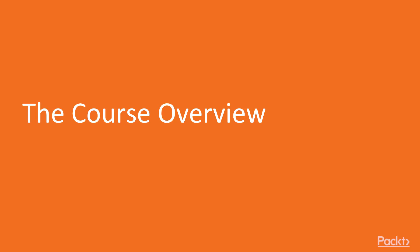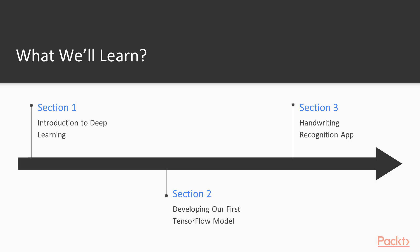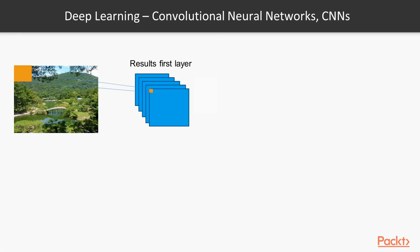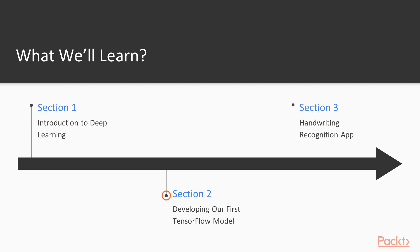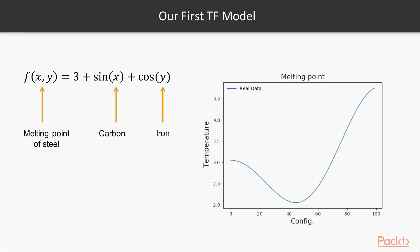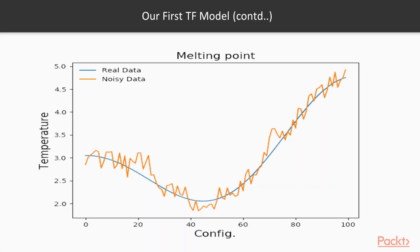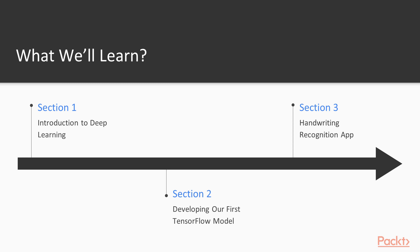This course is divided into six different sections. First, we will introduce what deep learning is and some basic concepts in order to understand the following content. In the second section, we will develop our first TensorFlow model, and we will be introduced to the TensorFlow syntax and basic understanding of key functions to create models. Then, in the following four sections, we will develop different models to solve realistic problems using TensorFlow.